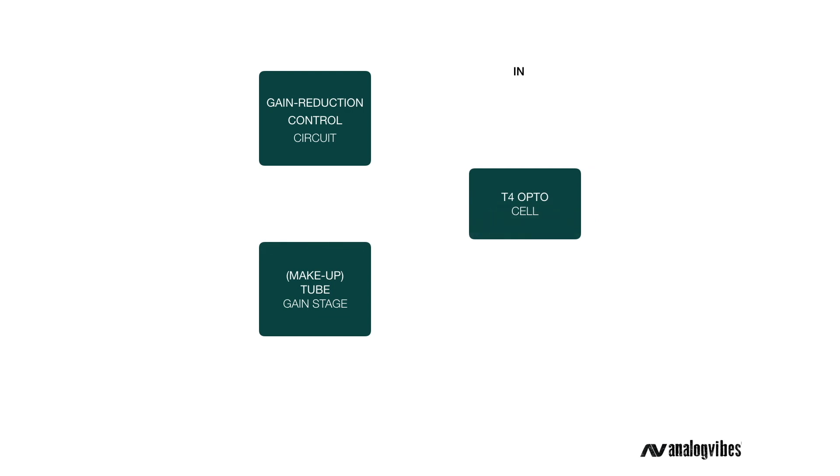So a portion of the input signal coming straight from the input transformer is directly fed into the gain reduction control circuit, which in short decides how much gain reduction the T4 applies before the signal is getting forwarded to the makeup amp and from there to the output.